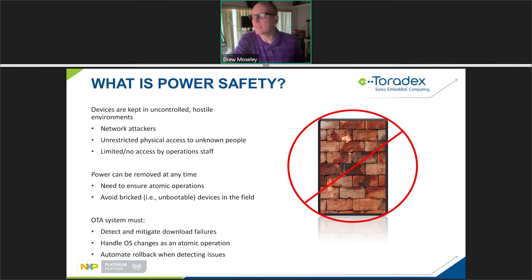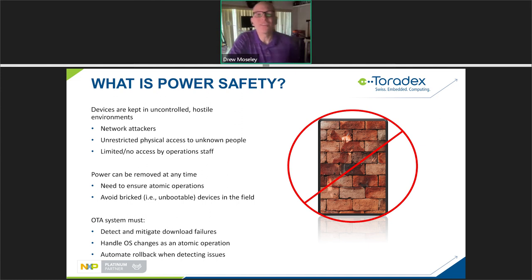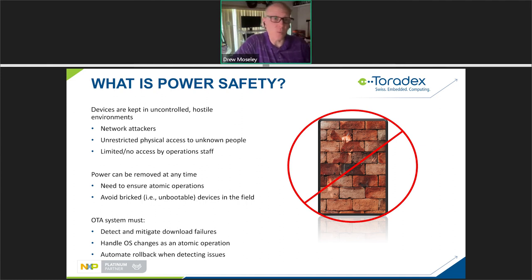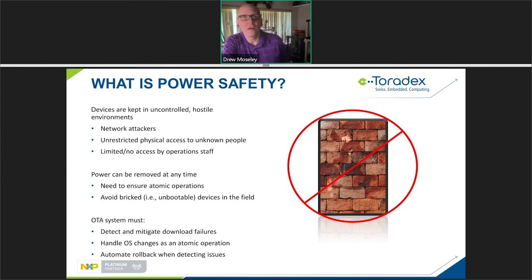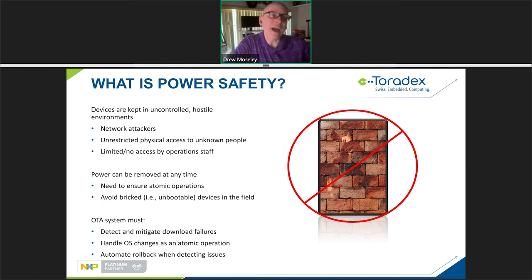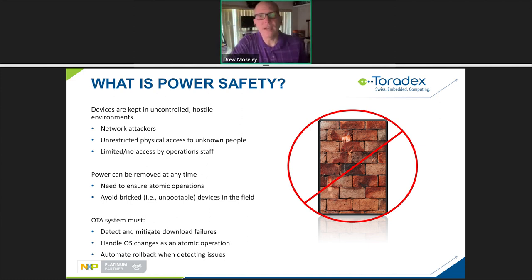The goal is to avoid bricked devices in the field. To implement this, the OTA system must detect and mitigate power failures — detecting where the system was in the update and being able to either retry or restart. Everything must be essentially an atomic operation, and no component in the system needs to know that updates are happening apart from the update system itself. Rollback must be automated; otherwise all of this is irrelevant and you'd have to do a lot of manual work anyway.